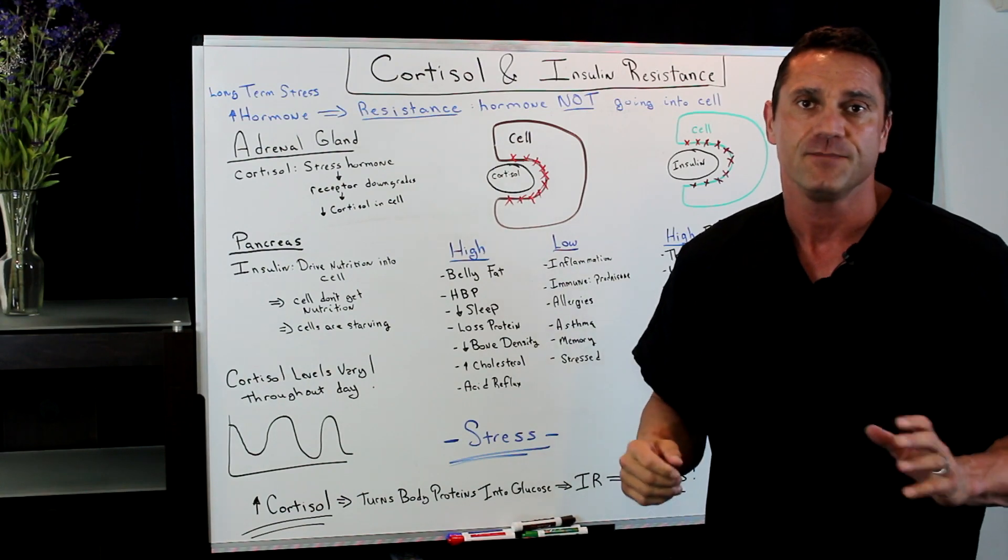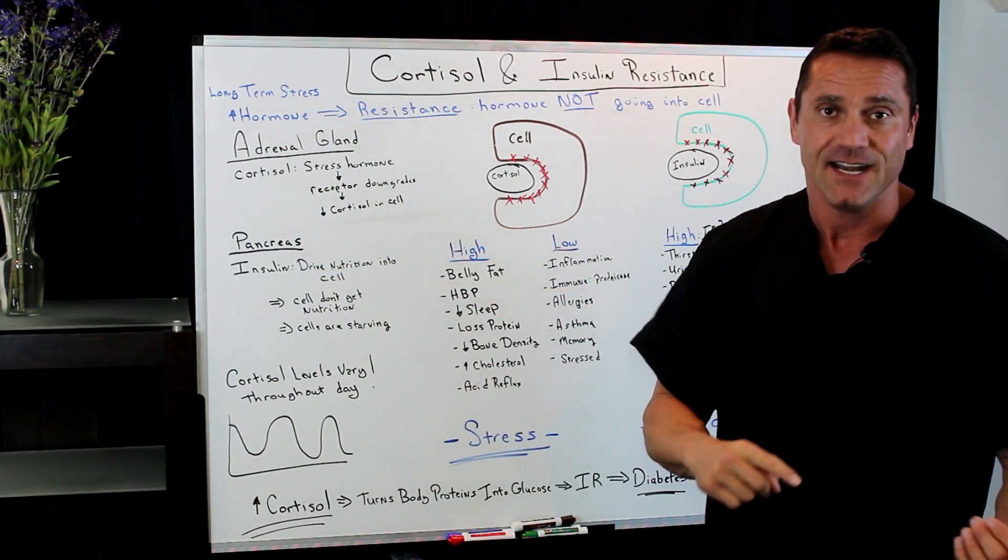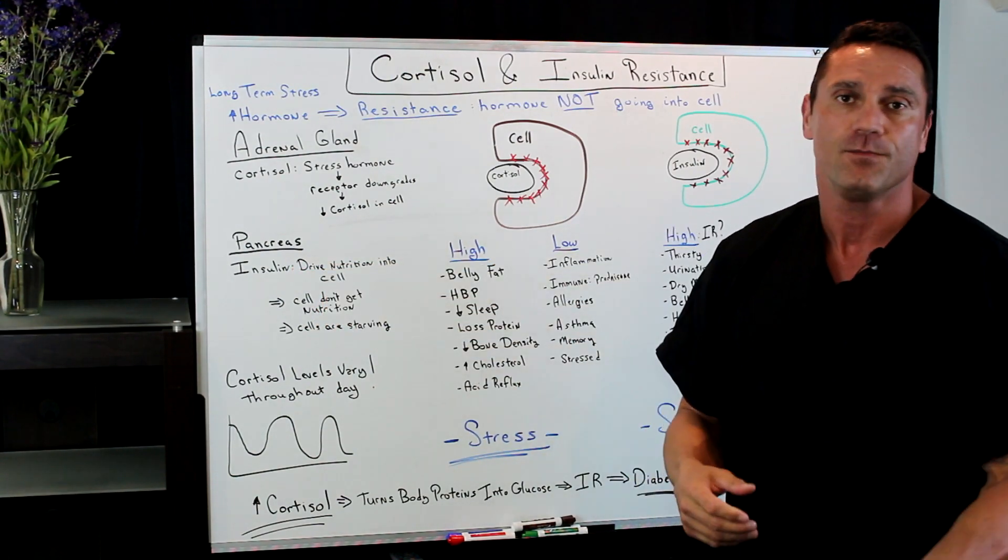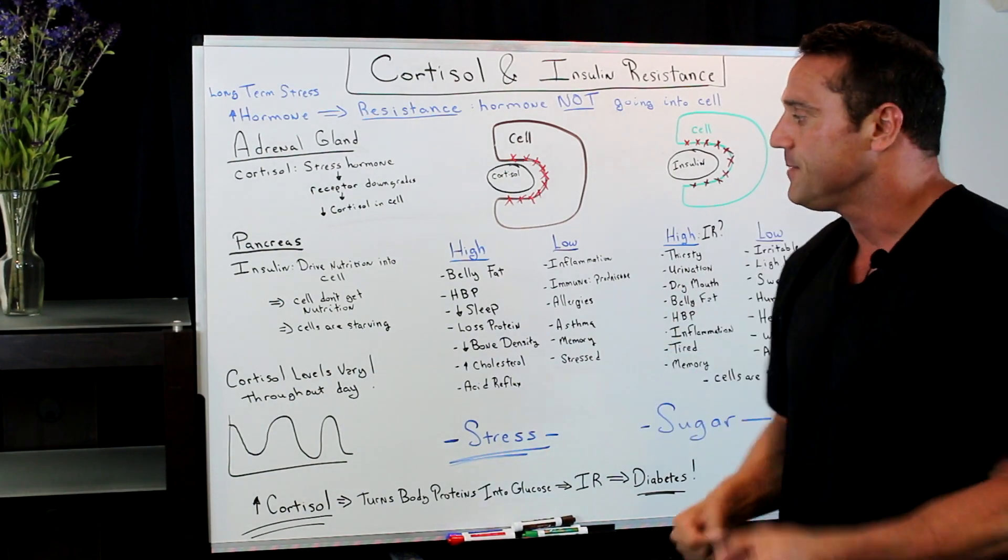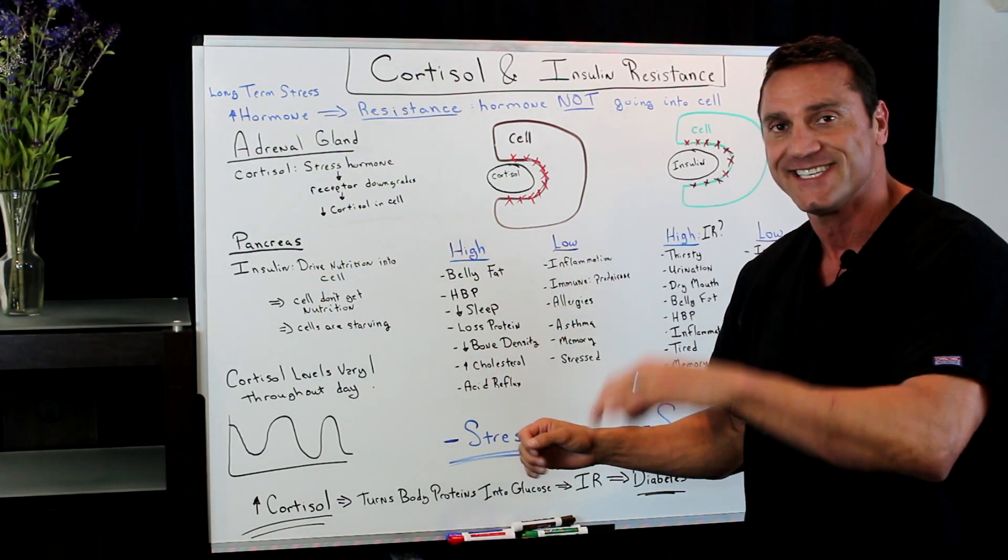This is where the pancreas comes in. The pancreas is a phenomenal organ. It's an endocrine and an exocrine organ. Insulin is produced in the pancreas. It's released when you have sugar because the function of insulin is to drive nutrition into the cell.